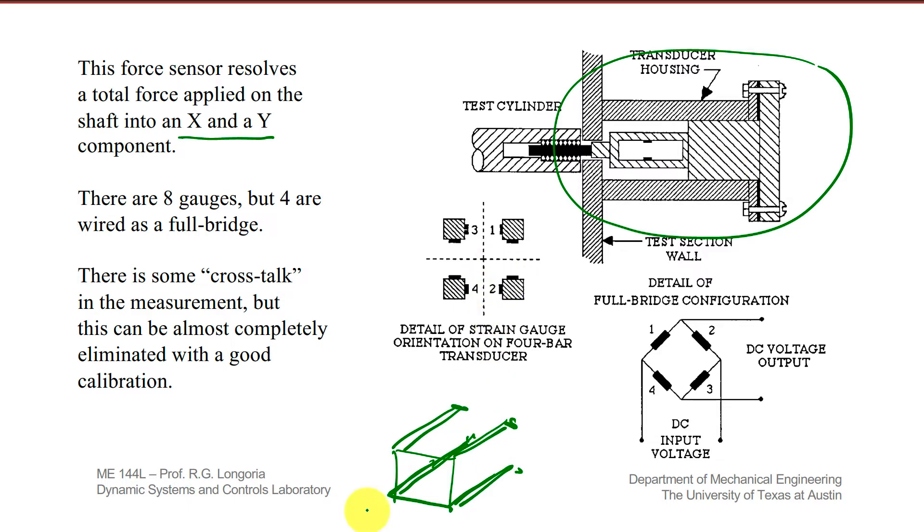Looking at it from this face, you basically have two bridges. One is on the interface of these beams, and the other is on these interfaces. So any forces in this direction, you can figure that like a full bridge. Forces in this direction, you use these four gauges to measure, say, the X, and here to measure the Y. Each one of those is wired separately as a full bridge. And so you can measure XY forces.